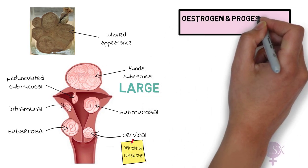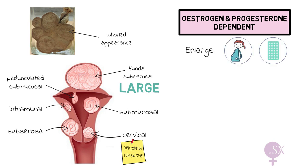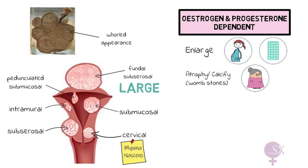Fibroids are very likely to be dependent on estrogen and progesterone. They tend to enlarge in the presence of high estrogen and progesterone, such as in pregnancy, or when a woman is on the pill or taking HRT. On the other hand, fibroids will atrophy and calcify in times of low estrogen and progesterone, such as during the menopause. When they calcify, they are sometimes referred to as womb stones.